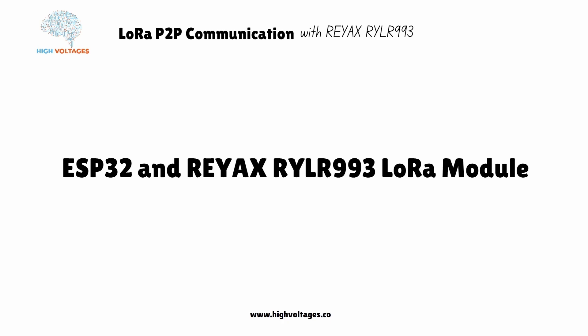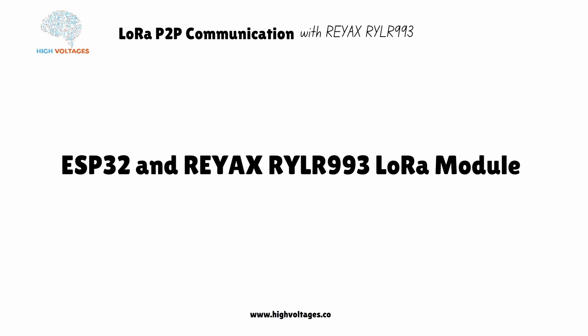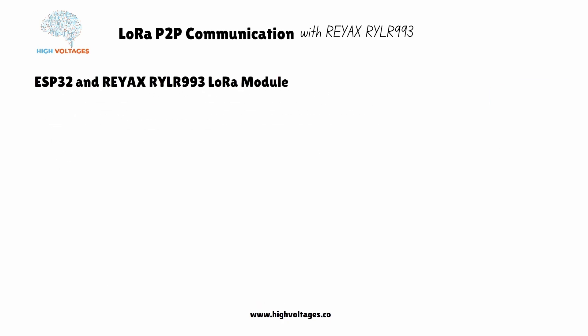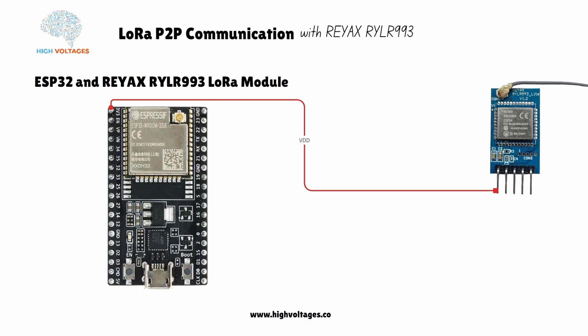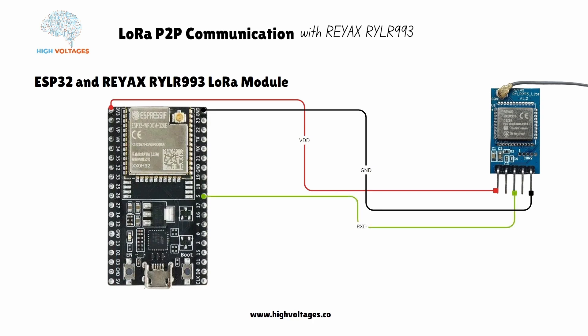First, let's see how to interface the RYLR993 module with ESP32. We will connect the power pin to 3.3V of the ESP32, connect ground to any ground pin of the ESP32, and connect the RX pin of the LoRa module to pin D5 of the ESP32.